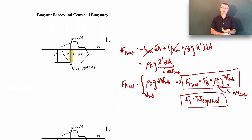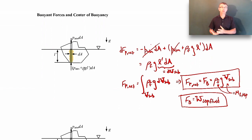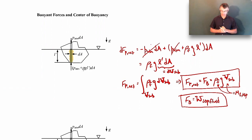Archimedes' principle comes from a story about Archimedes. He was asked to determine whether the king's crown was made from pure gold or a gold-silver alloy. What Archimedes did was weigh the crown in air, and then weigh the crown when it was submerged in a liquid. When submerged, there'd be a buoyant force acting on it that would make it weigh effectively a little less. He was then able to use that information to figure out the density of the crown, and compare it to the known density of gold to see if there was any silver mixed in.